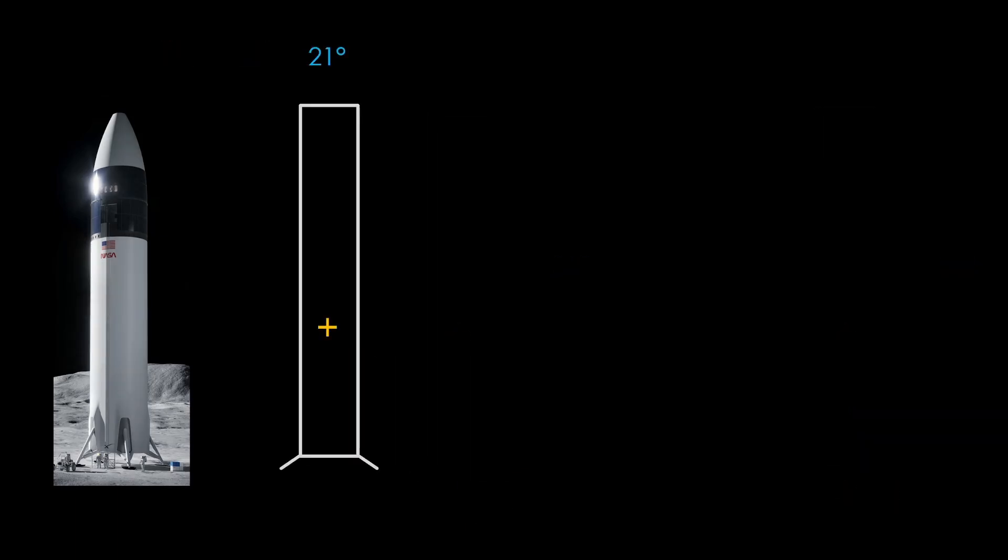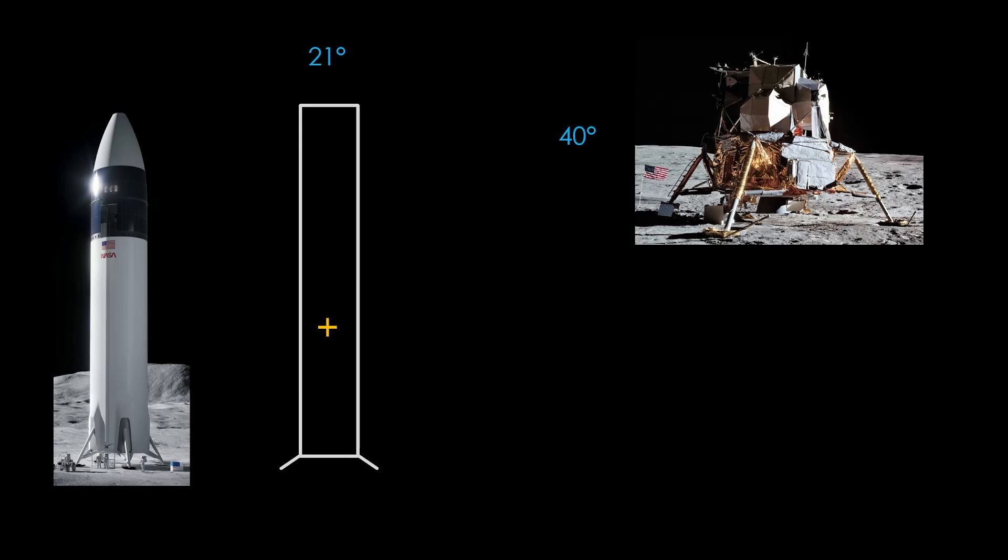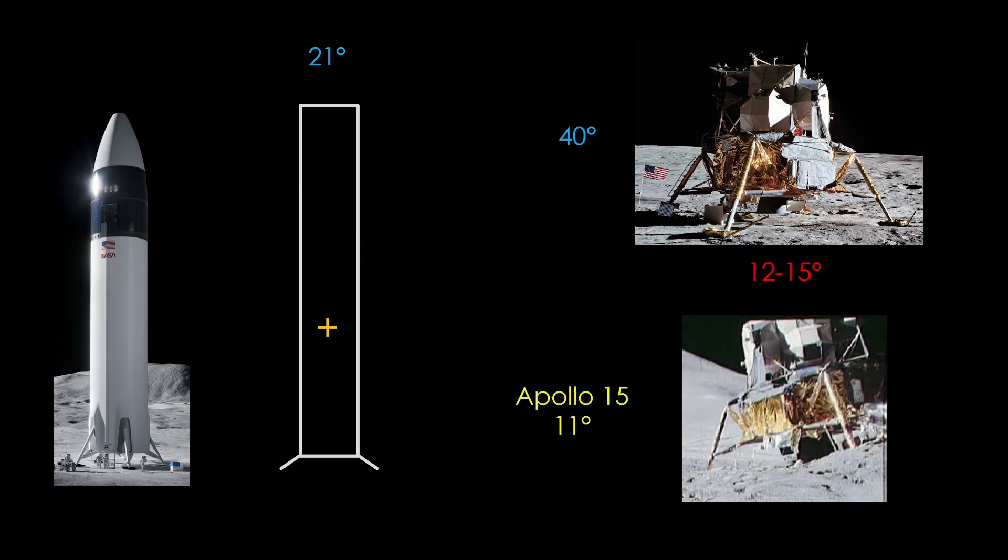How does that angle compare to Apollo? The Apollo lunar module was quite resistant to tip over, requiring a full 40 degrees before it would tip, which is quite a bit higher than the lunar Starship. But the LM had a takeoff limit of either 12 or 15 degrees depending on who you listen to, which seems pretty high, but on Apollo 15 the lunar module ended up at an angle of 11 degrees, which is close to the limit.